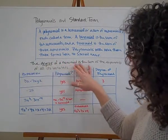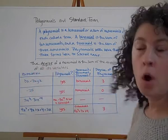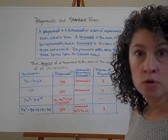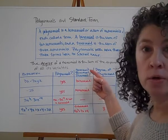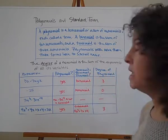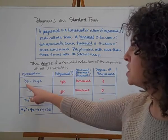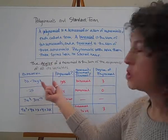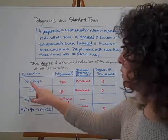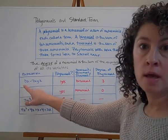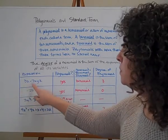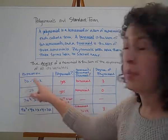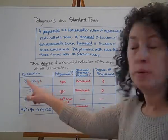The degree of a monomial is the sum of the exponents of all its variables. We're going to look at some expressions and decide if they are polynomials or not, whether each is a monomial, binomial, or trinomial, and talk about the degree. The expression 3x minus 7xyz — is it a polynomial? Each term, split up by adding and subtracting, must be a monomial. 3x is a monomial, and negative 7xyz is also a monomial. So yes, this is a polynomial, and it is a binomial because it's made up of two terms.